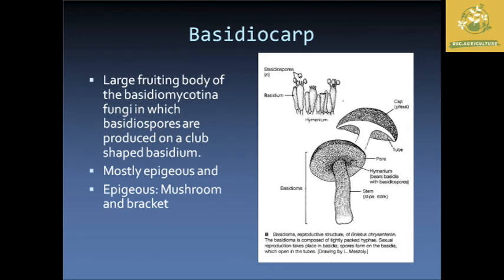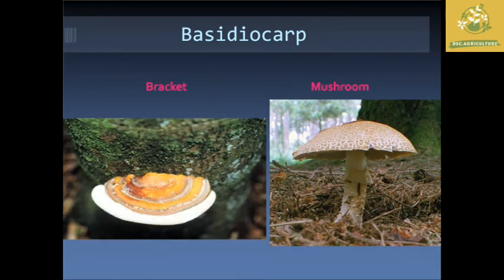Now we are going to see about the basidiocarp. Basidiocarp species are also known as mushroom or club fungi species. They are the larger fruiting bodies in the fungi group, having a club-shaped basidium at the top. They are mostly epigeous. Mushroom and bracket-type structures are found in these fungi. On a host plant, curved or semicircular bracket structures can be seen, while mushrooms are found in forest regions.